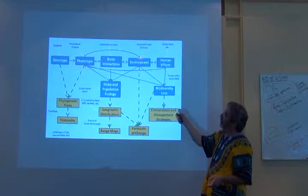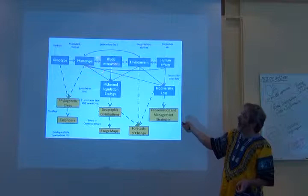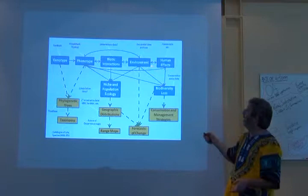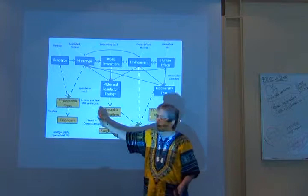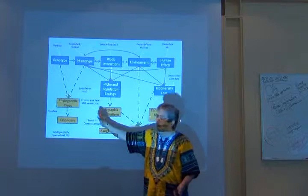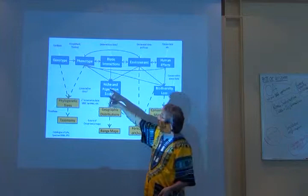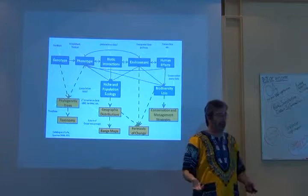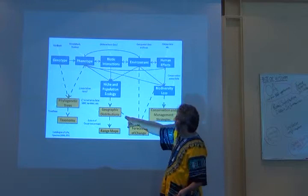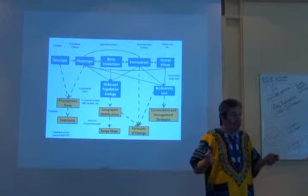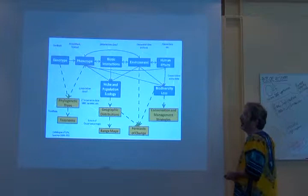In blue, we have a kind of panorama of the organization of life as genotypes and phenotypes, interactions amongst different phenotypes, the environment, humans, and the biodiversity loss that humans cause. And then in yellow are the types of information you could assemble relevant to these different things. For example, genotype and phenotype are processed into hypotheses about the evolutionary history of life. Or we can put together information about geographic distributions, environment, human effects, and biodiversity loss to make predictions about change. So this is just one schema.